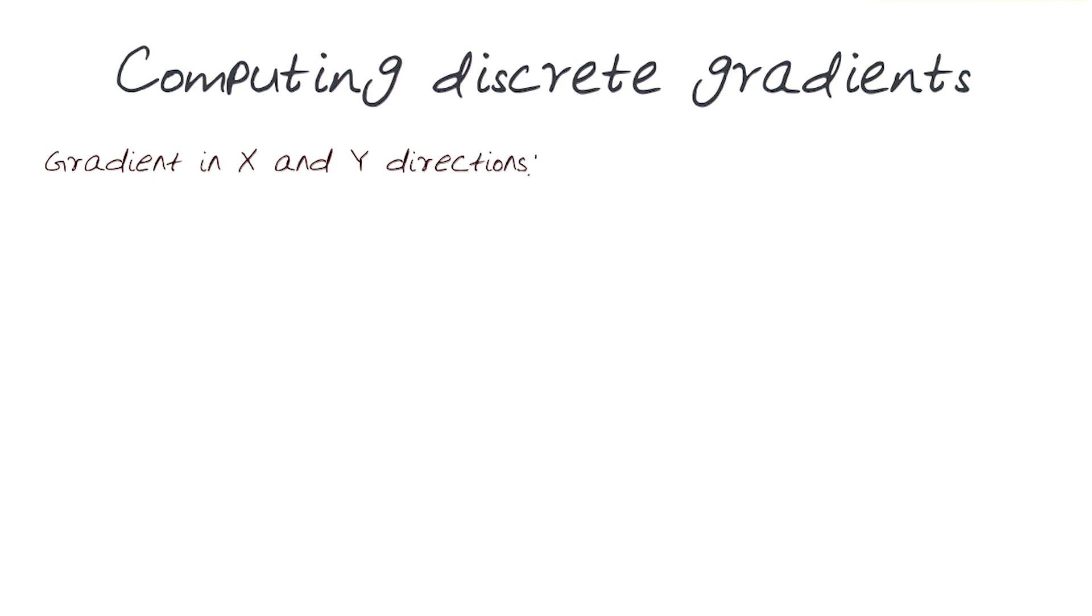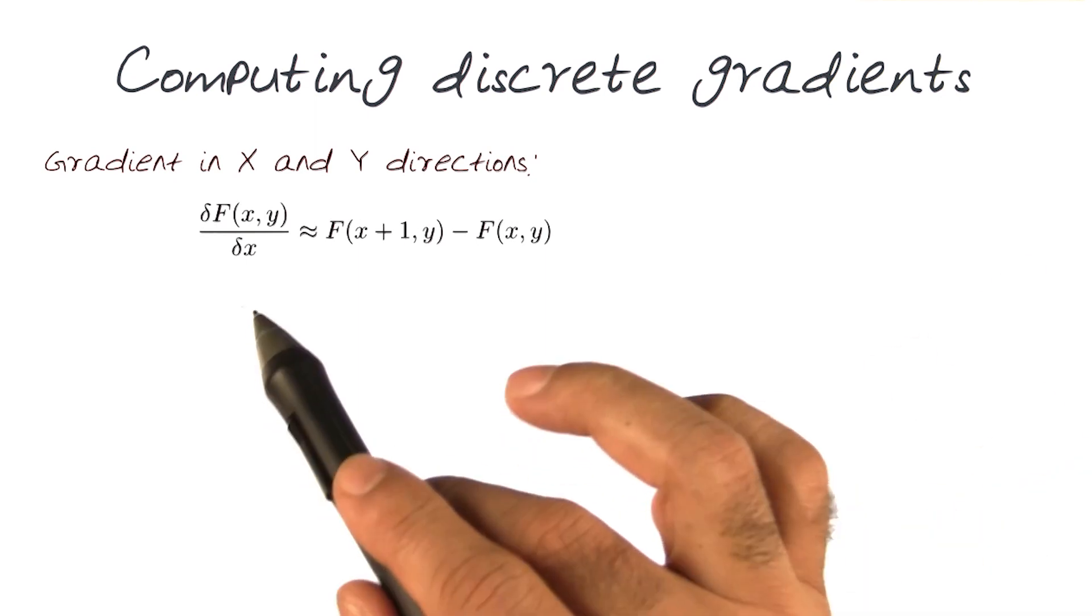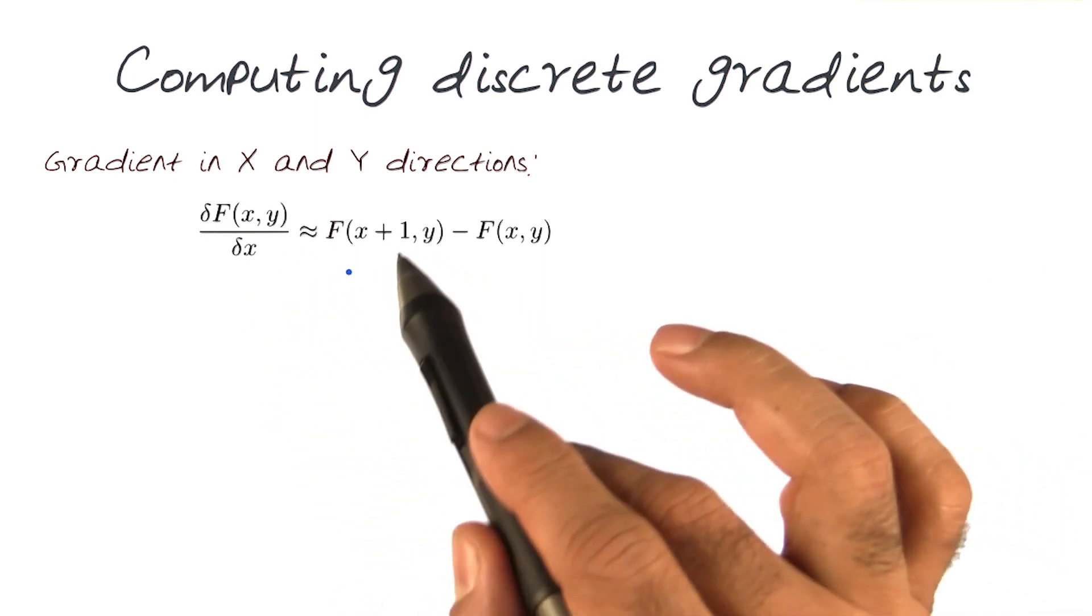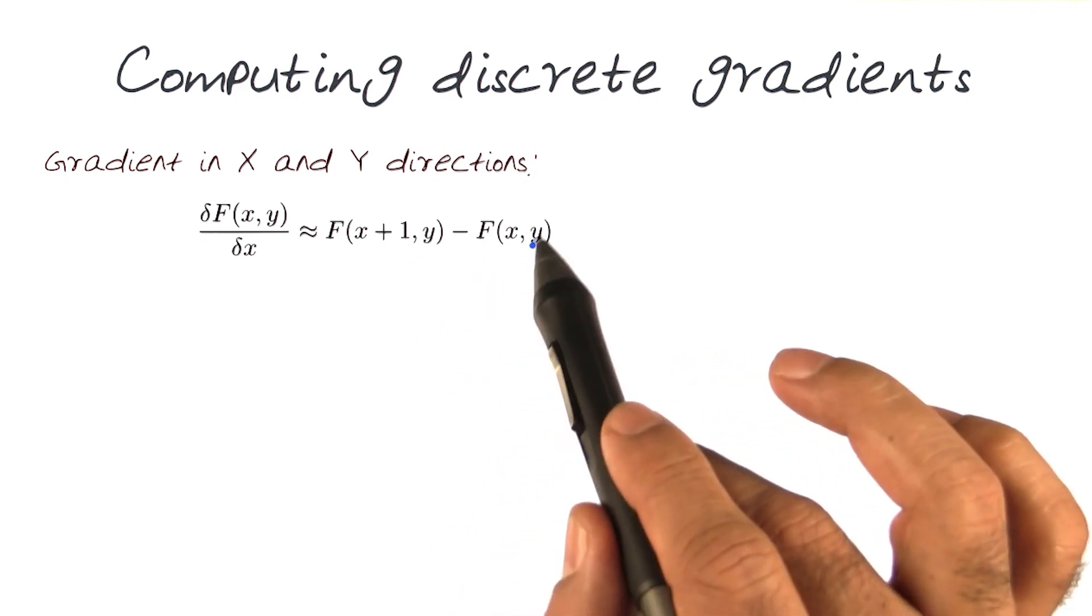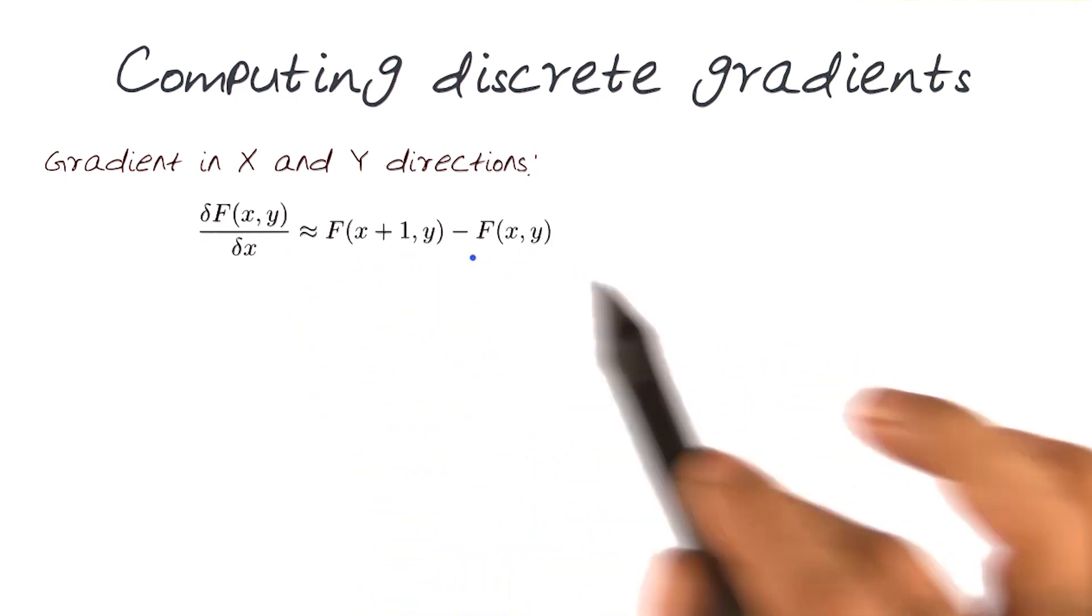We want to be able to compute discrete gradients, looking for gradients in x and y direction. Again, remember this was my equation looking for a change in x and y. In this case, y is going to remain the same because I'm going column by column.